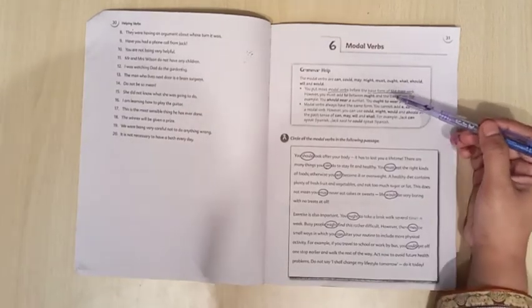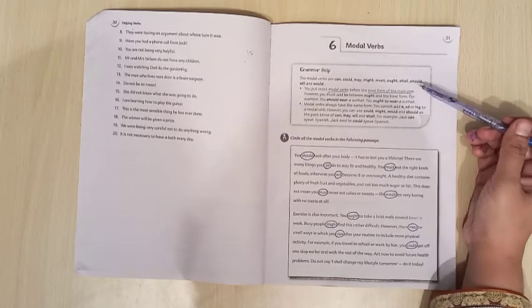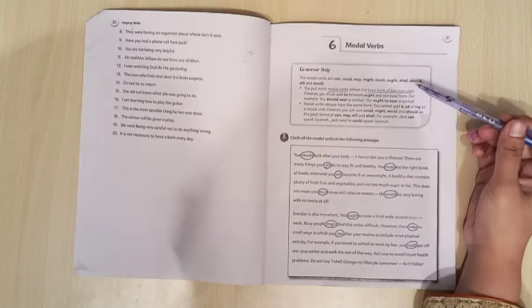Now come to the grammar help box. Our modal verbs are can, could, may, might, must, ought, shall, should, will, and would. These are the modal verbs.